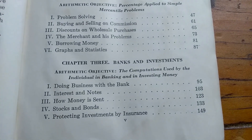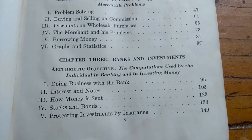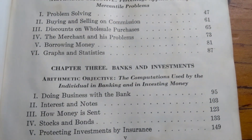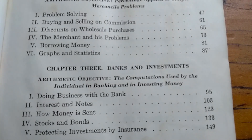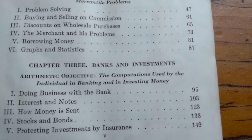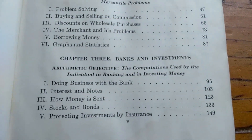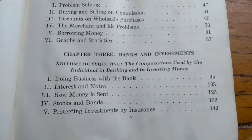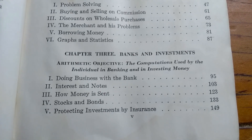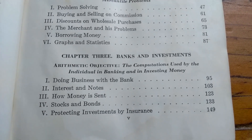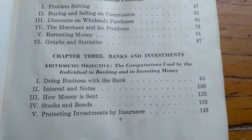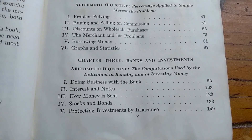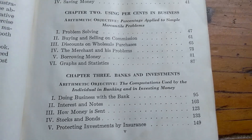Chapter three is on banks and investments. The arithmetic objective is the computations used by the individual in banking and investing money. It covers doing business with the bank, interest and notes, how money is sent, stocks and bonds — it's a math book that talks about stocks and bonds, completely ridiculous — and protecting investments by insurance.